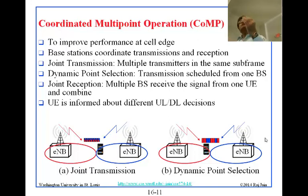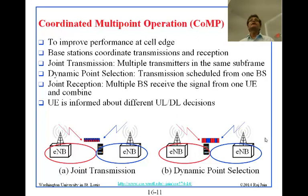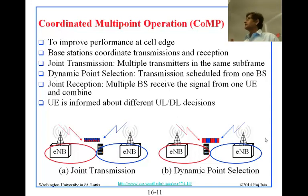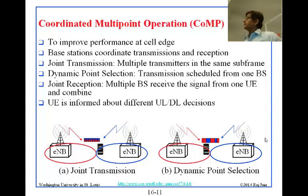Because of directionality, ranging, and everything else, the cells are programmed such that resources are allocated so that only people at the edge have a problem, and that problem is solved there. This is called Coordinated Multipoint Operation — multipoint because of multiple cells that are coordinating.